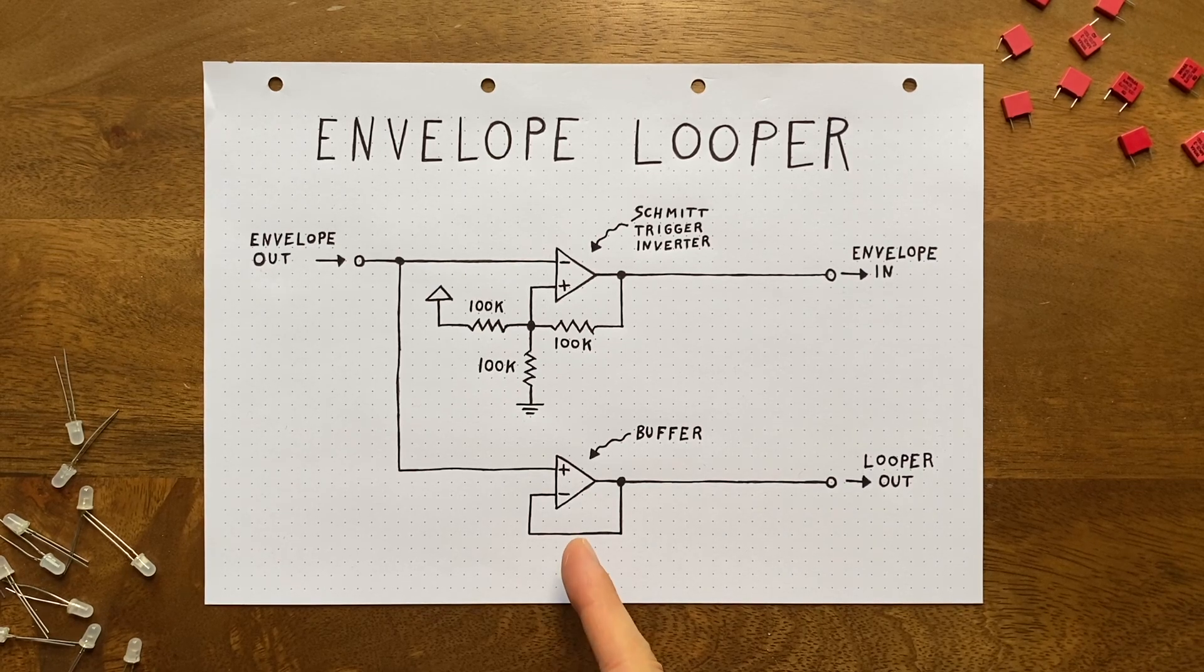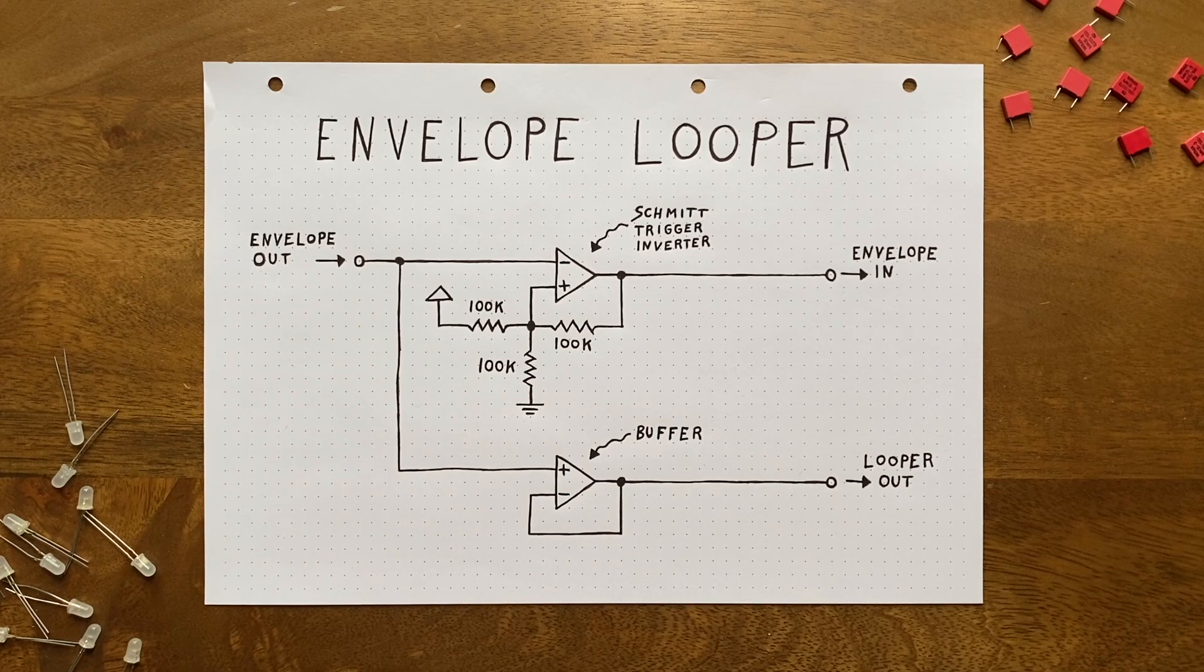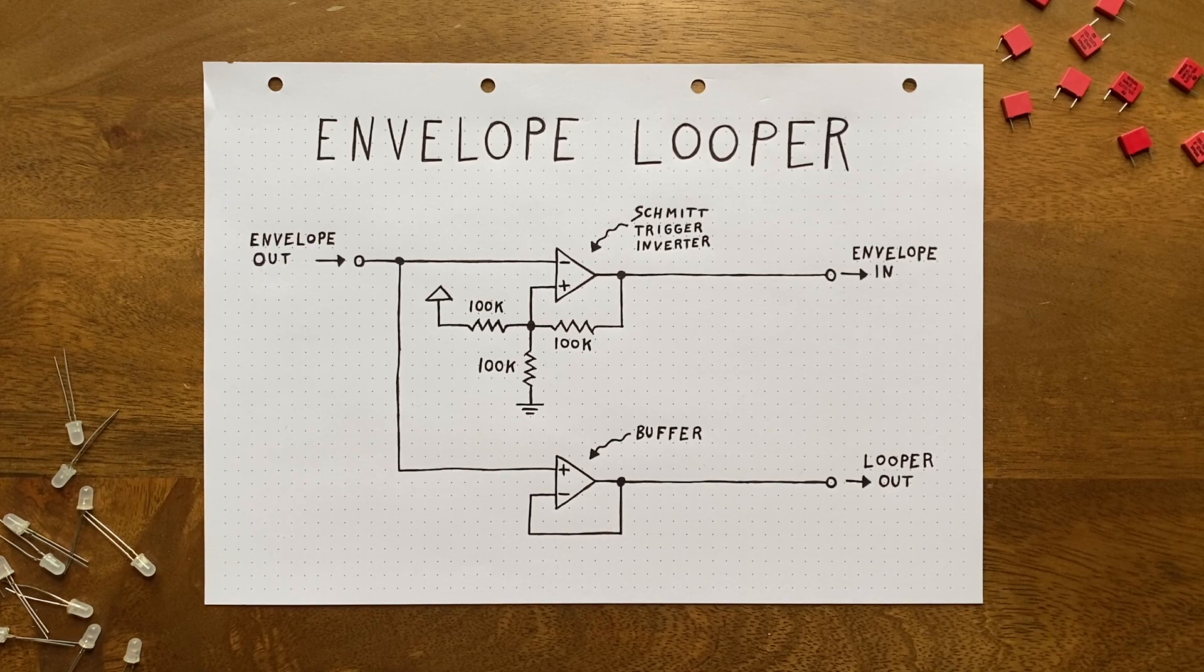The op amp down here is just a simple buffer for the envelope's output. It's not strictly necessary, but I included it to avoid loading down the original signal.